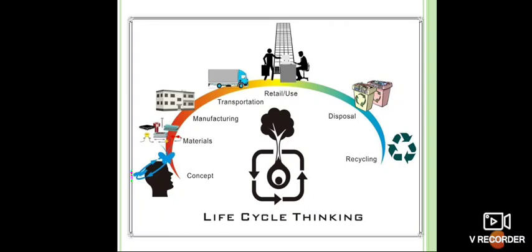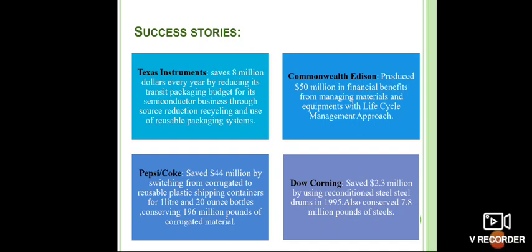The lifecycle starts from the concept of the business, then material procurement, manufacturing of finished goods, transportation, retail and distribution channels, then use and disposal. After disposal, there should be reduce, reuse, and recycle. Till that point, we have to think about green supply chain management.